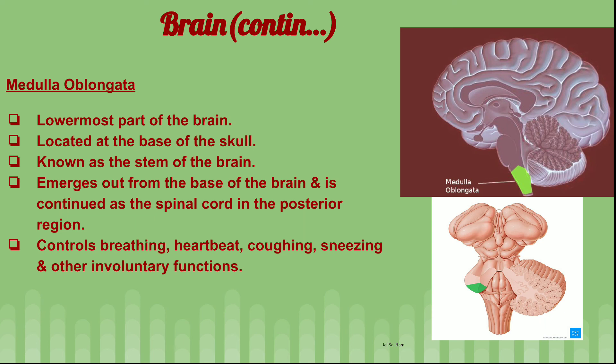The medulla oblongata is the lower part of the brain, located at the base of the skull. It is known as the brain stem. It emerges from the base of the brain and continues as the spinal cord in the posterior region. It controls breathing, heartbeat, coughing, sneezing, and other involuntary functions.